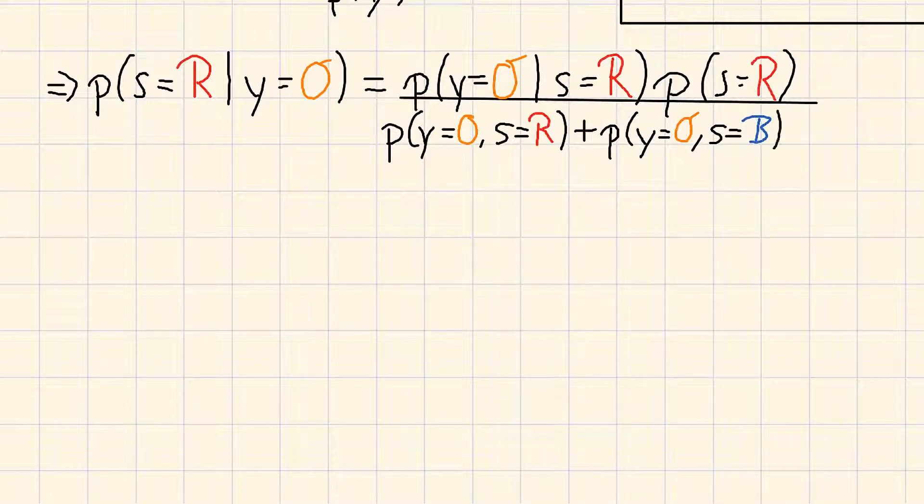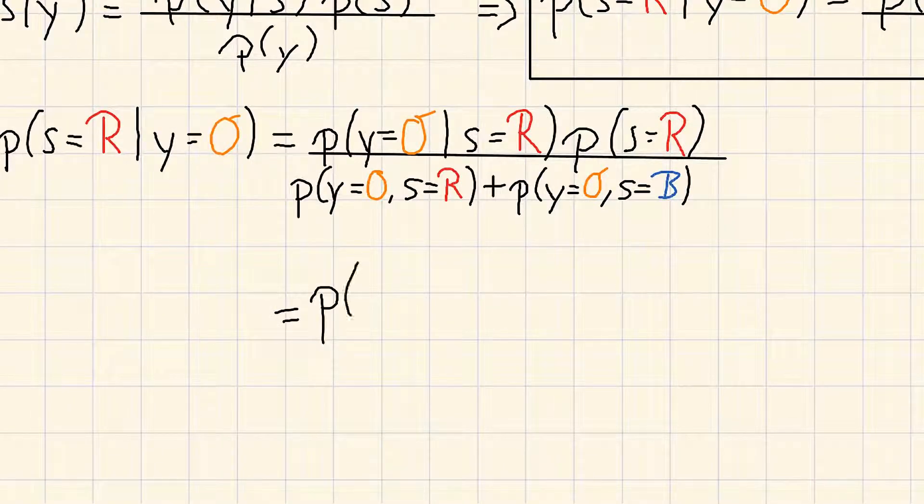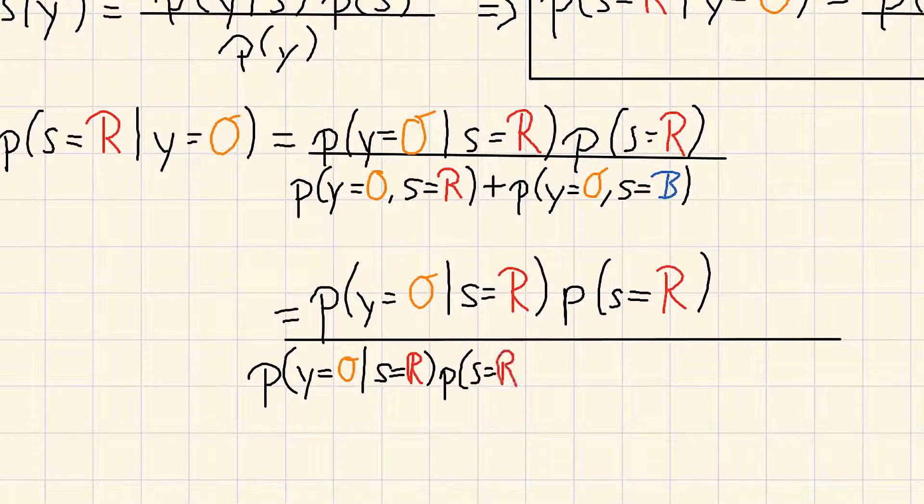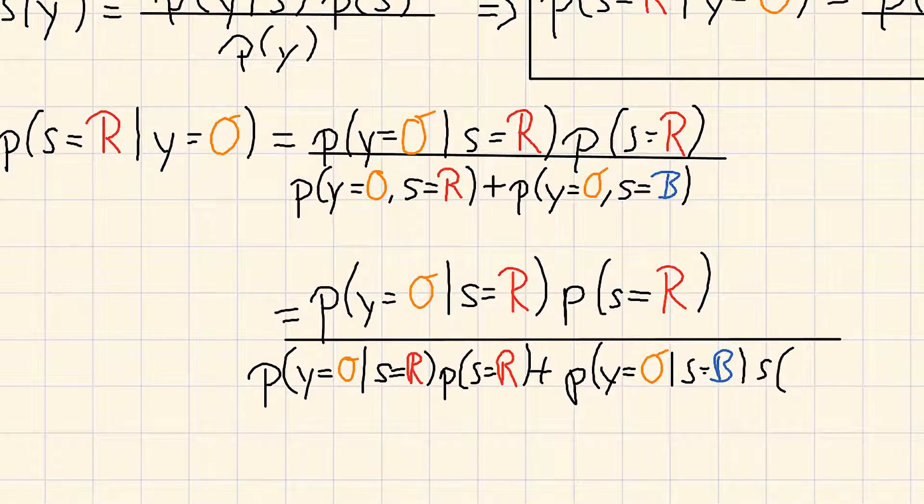And if you want you can even go a step further and apply the product rule in the denominator again. Which would give you p of y equal o given s equal r times p of s equal r. And we divide that by p of y is equal to o given s is equal to r times p of s equal to r plus p of y is equal to o given s is equal to b times s is equal to b.